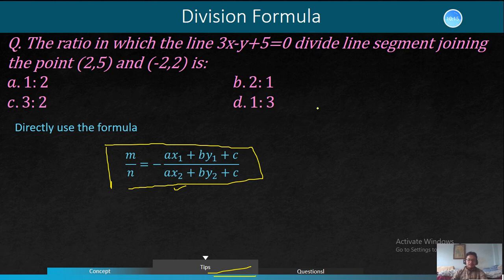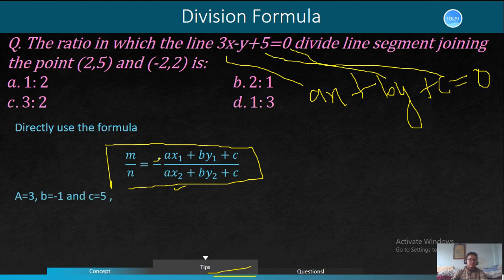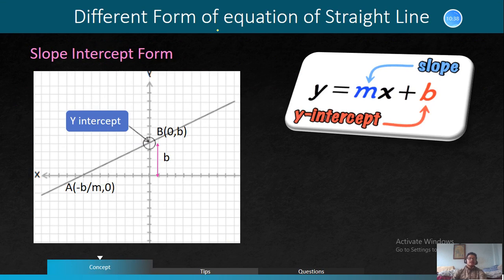Now here is the formula. The form of equation is Ax plus By plus C. This is the general formula. A is 3, B is minus 1, and C is 5. This is the different form of equation of the straight line.